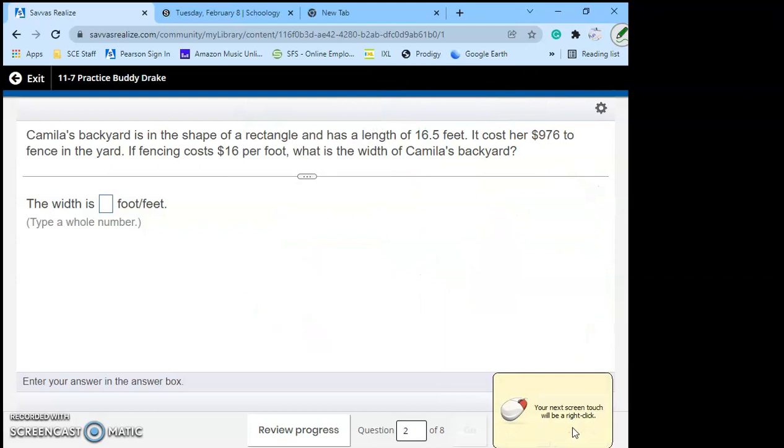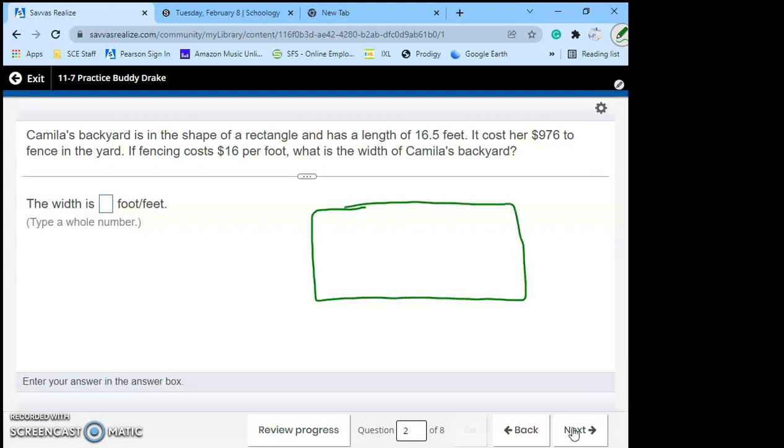Camila's backyard is in the shape of a rectangle and has a length of sixteen point five feet. It cost her nine hundred seventy six dollars to fence in the yard. Perimeter is fence.